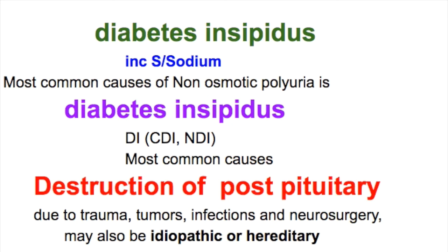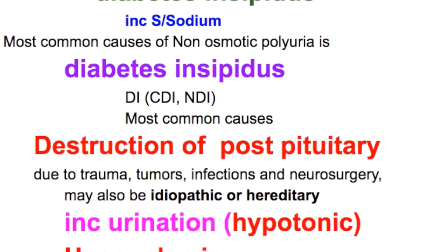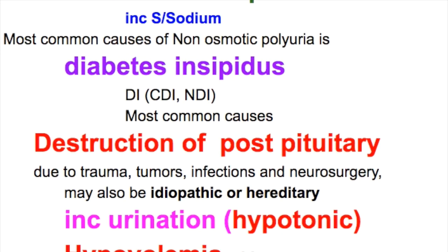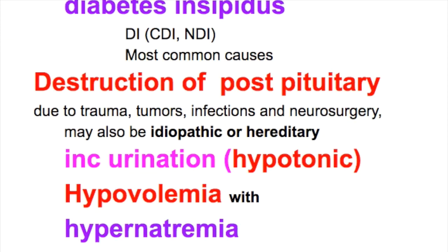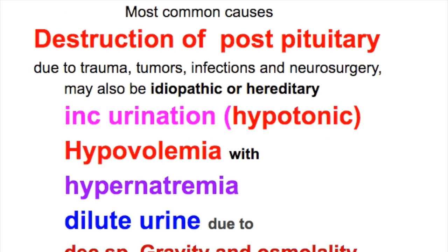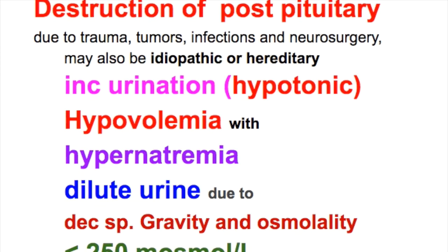The features of diabetes insipidus include increased urination, hypovolemia, hypernatremia, and a dilute urine due to decreased specific gravity and osmolality, with osmolality less than 250 milliosmols per liter.